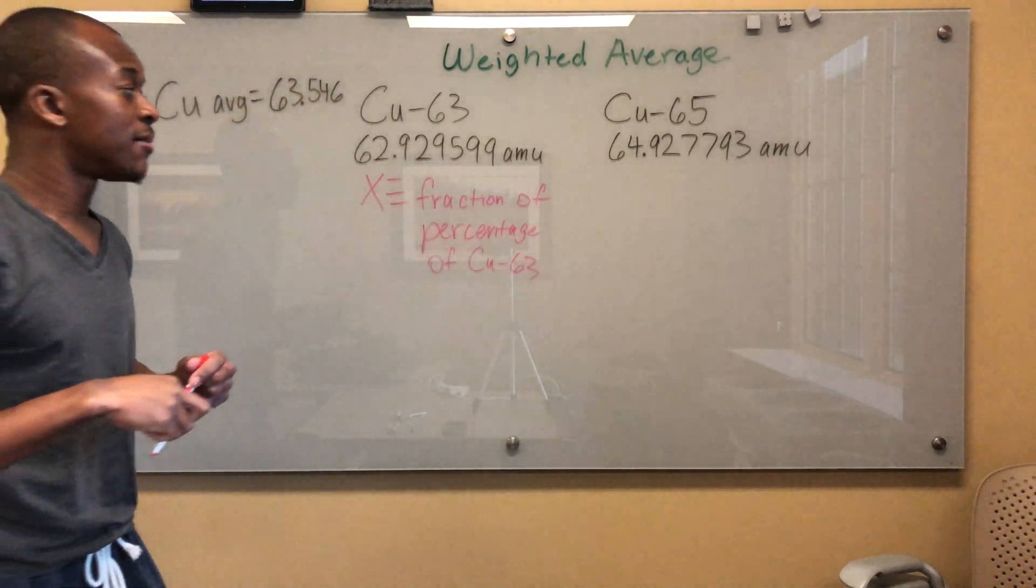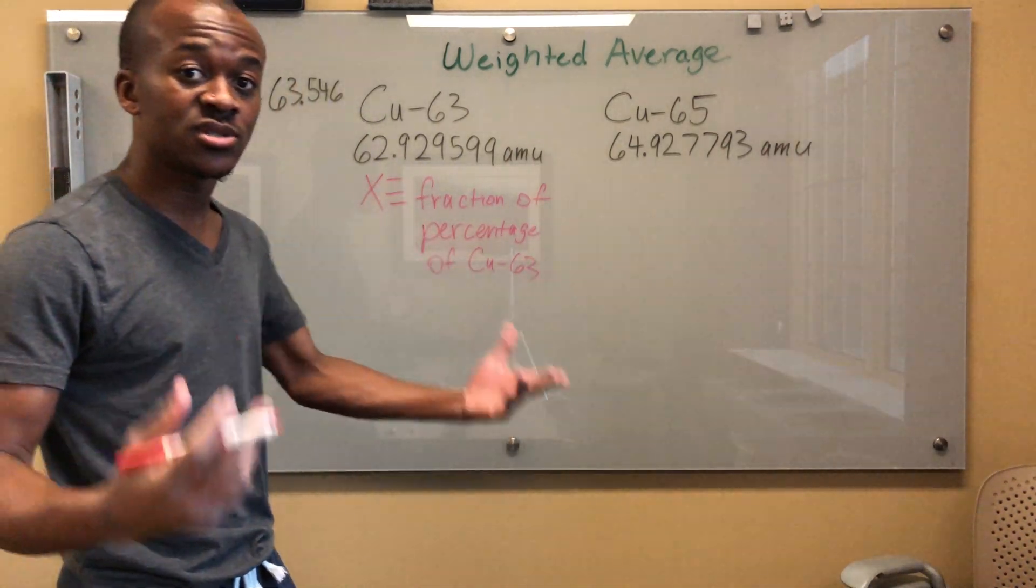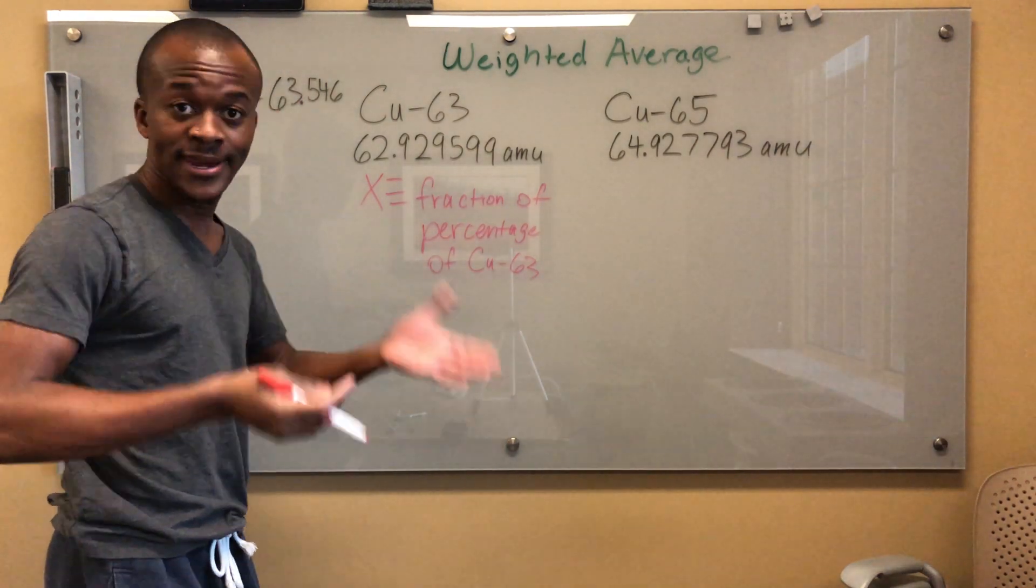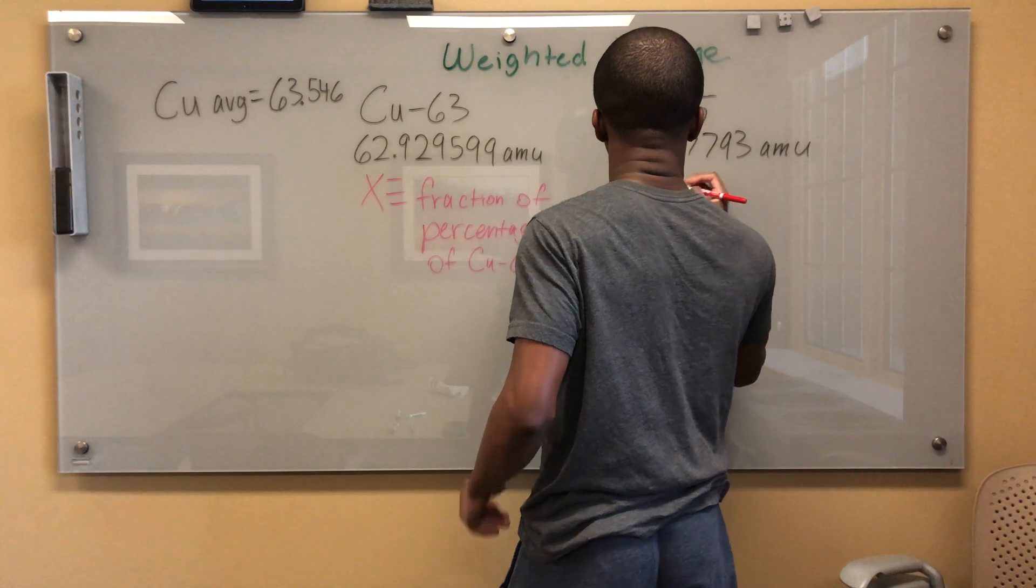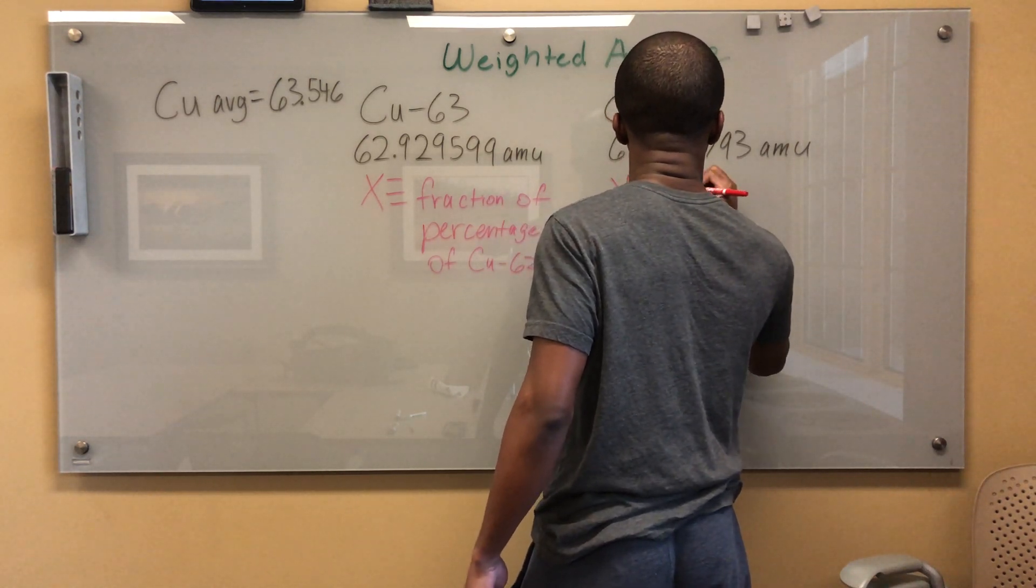And what does that mean? I'm going to say that this is the fraction of time that Cu-63 is occurring in nature, right? Now, same thing for Cu-65, Y equals the fraction of percentage of Cu-65.